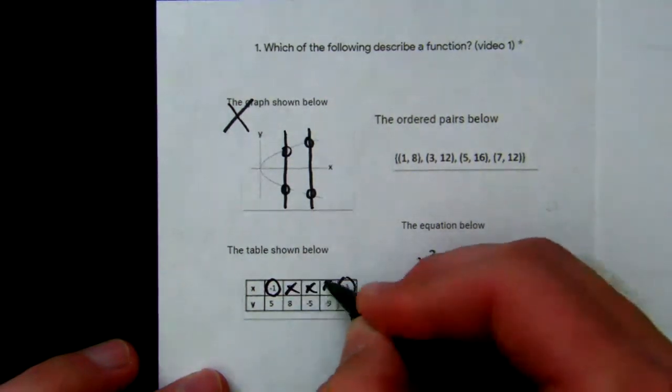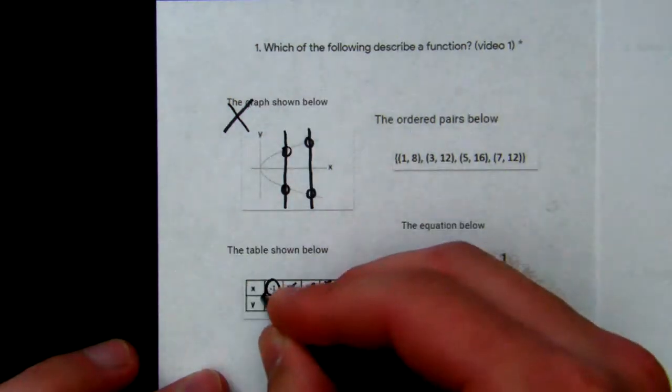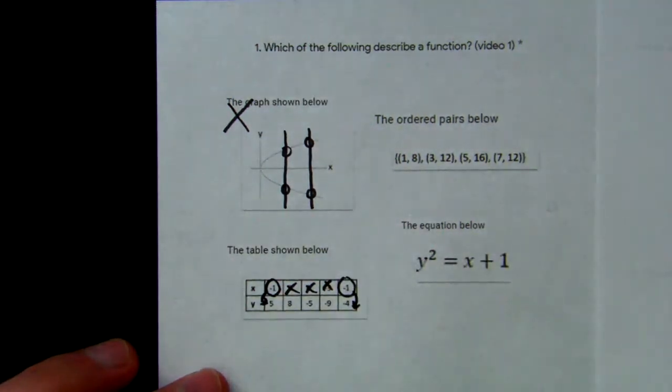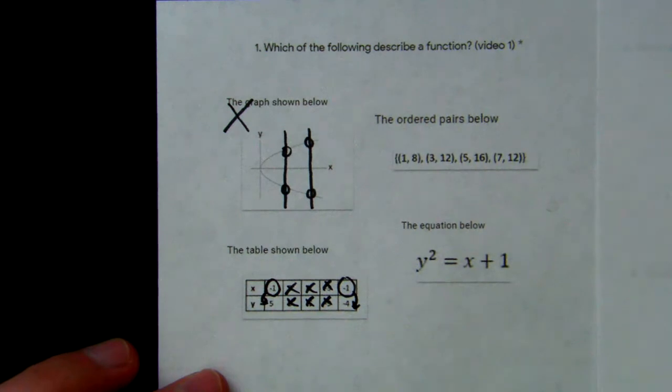We don't care about the others anymore because they're different. For the repeated x-values, we look at the y-values. If the y-values are the same, then we know it's a function. But if they're different, it can't be a function.